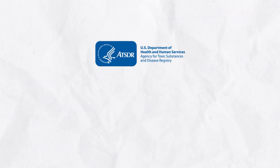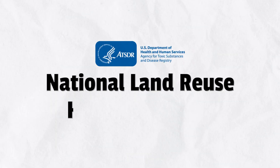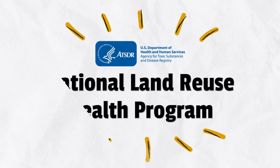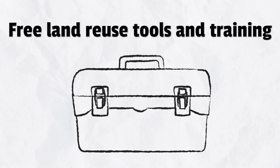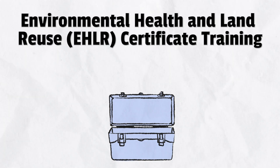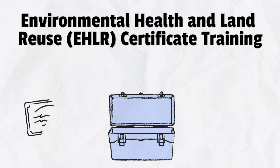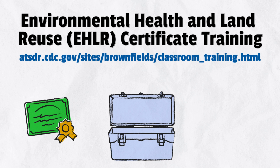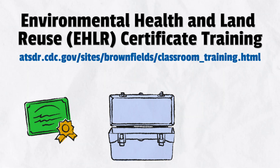The Agency for Toxic Substances and Disease Registry's National Land Reuse Health Program has resources to help people redevelop land reuse sites in their communities. ATSDR's Land Reuse Program provides free tools and training to help professionals and community members learn about land reuse and redevelopment. ATSDR's Environmental Health and Land Reuse EHLR Certificate Training is a free course created in collaboration with the National Environmental Health Association. It helps people understand the redevelopment process and build skills to incorporate community health throughout the process. The EHLR Certificate Training is available in a variety of formats and includes a series of five modules.